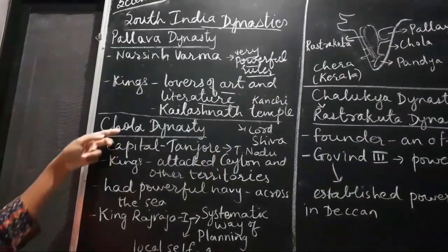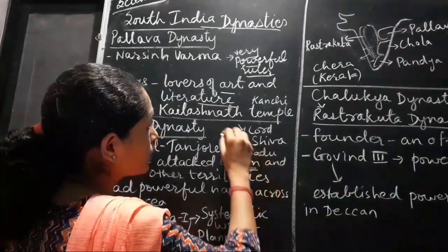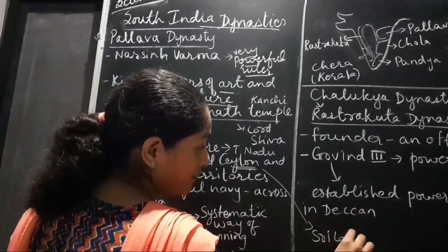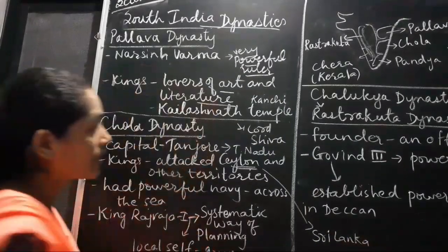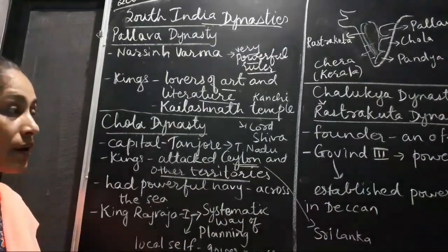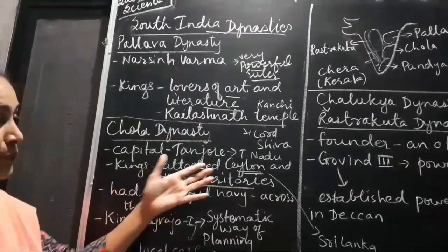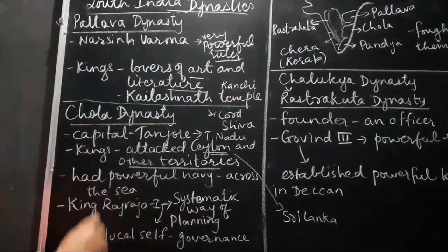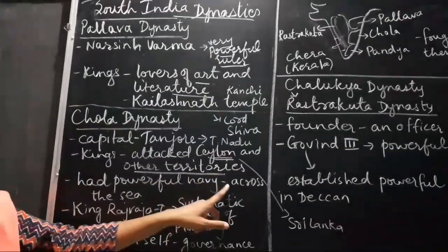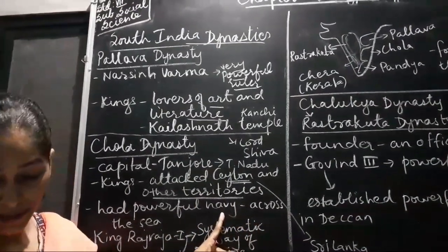The kings of the Chola dynasty used to attack Ceylon, which is now known as Sri Lanka. They had attacked Sri Lanka and many other territories also. They had captured territory up to Indonesia. They had a powerful navy through which they could attack across the sea, and this is how Sri Lanka was also attacked.